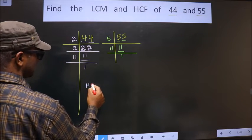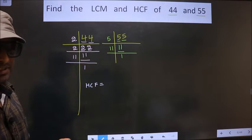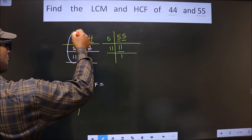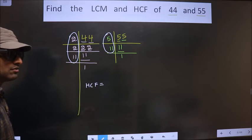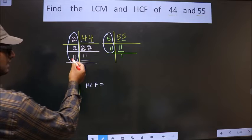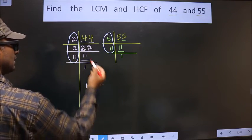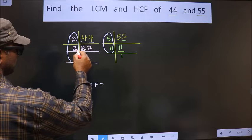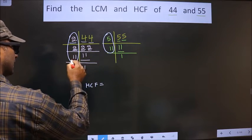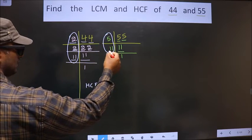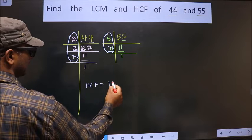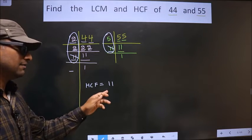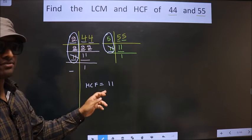Now our HCF is the product of numbers that are present in both factorizations. So we find the common numbers. Starting with 2 — do we have 2 in 55's factorization? No. Next number 2 — do we have 2 here? No. Next number 11 — do we have 11 here? Yes. So we take 11. No more numbers are left, so we have only one common number: 11. Therefore, HCF is 11.